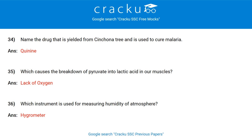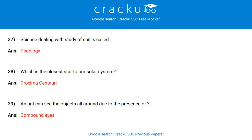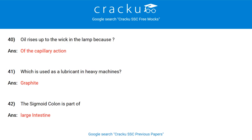Which instrument is used for measuring the humidity of the atmosphere? Hygrometer. The science dealing with the study of soil is called Pedology. Which is the closest star to our solar system? Proxima Centauri. An ant can see the objects all around due to the presence of which organ? Compound eyes. Oil rises up the wick in a lamp because of capillary action. Which substance is used as a lubricant in heavy machines? Graphite.